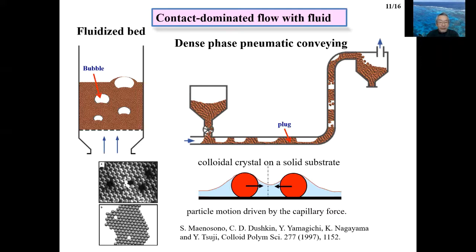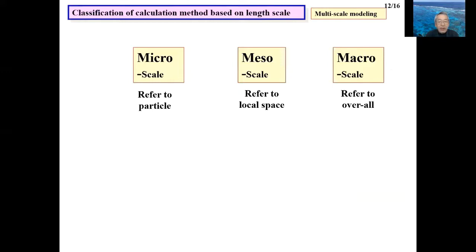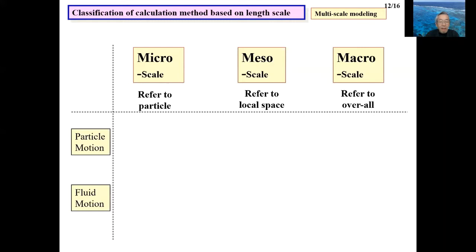From here, I will explain the calculation methods. In general, modeling of complex systems like multi-phase flows is well categorized using the concept of length scale, from micro to macro scale. The middle scale, the meso scale, lies between micro and macro. For multi-phase flow analysis, the micro scale refers to the particle size, the meso scale refers to local space, and the macro scale refers to the overall scale. I will divide the analysis into particle motion and fluid motion to explain these scales.